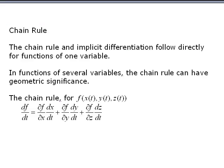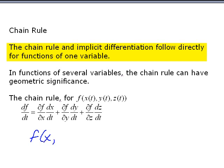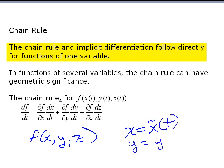Now I will explain the chain rule for functions of several variables. The chain rule and implicit differentiation are exactly the same as for functions of one variable, but when you look at several variables, the chain rule has some geometric significance that's interesting. So what we have is some function of x, y, and z, where x, y, and z are each functions of time t.